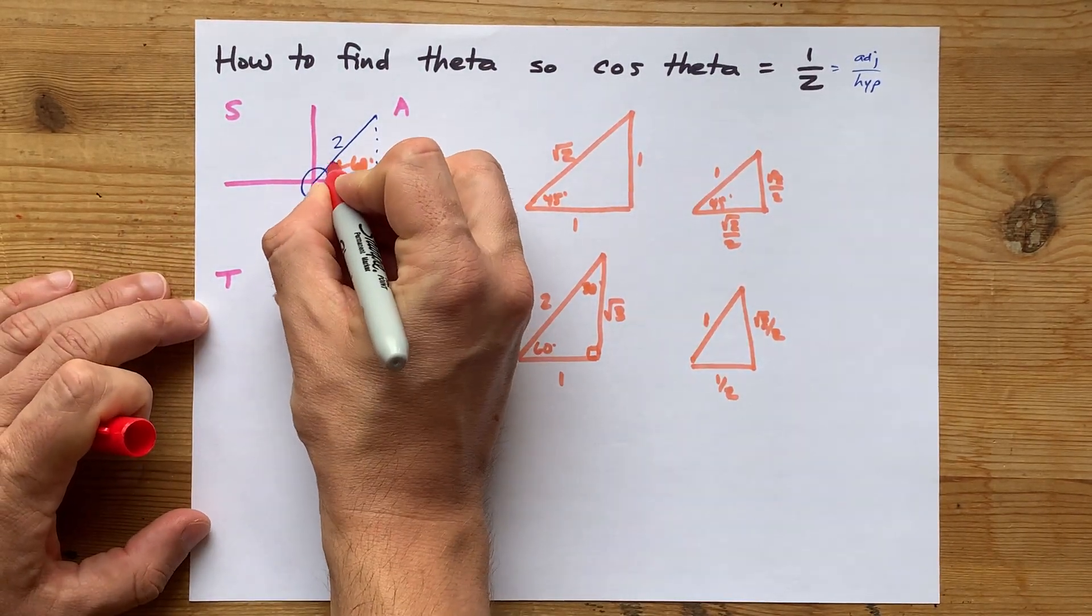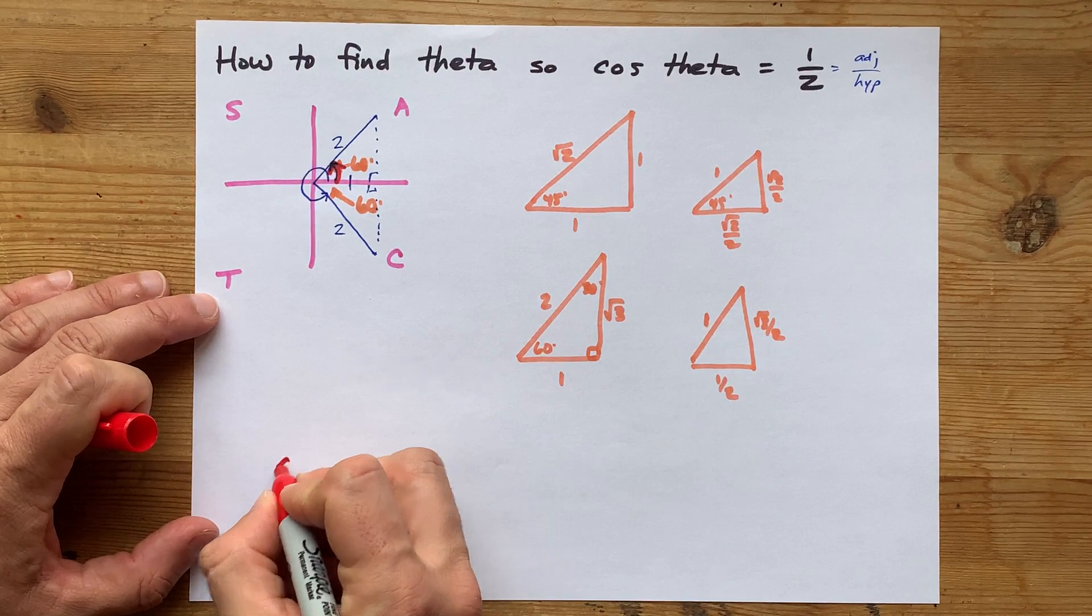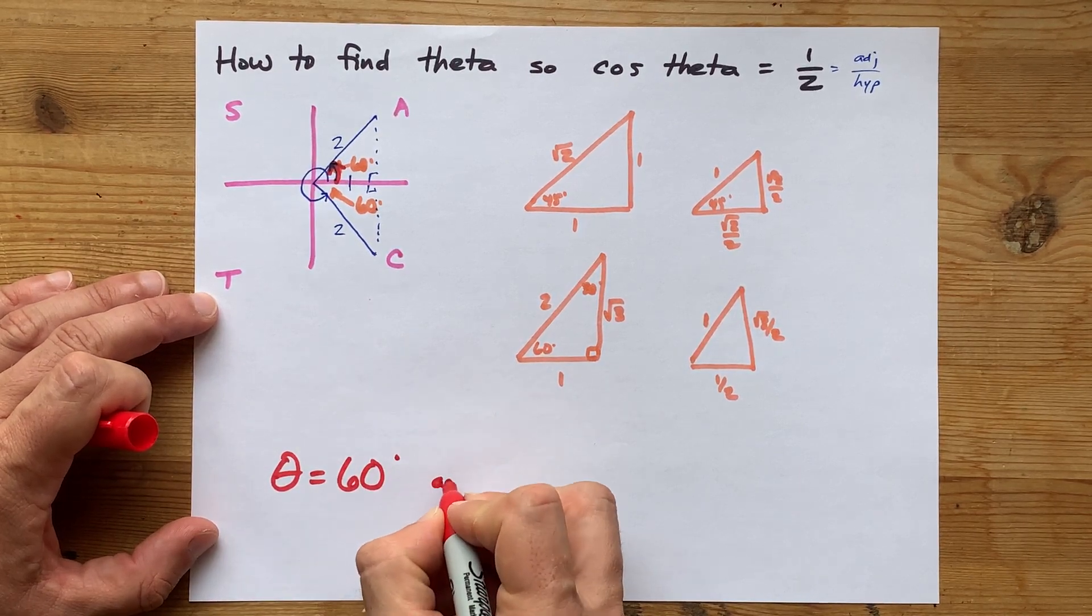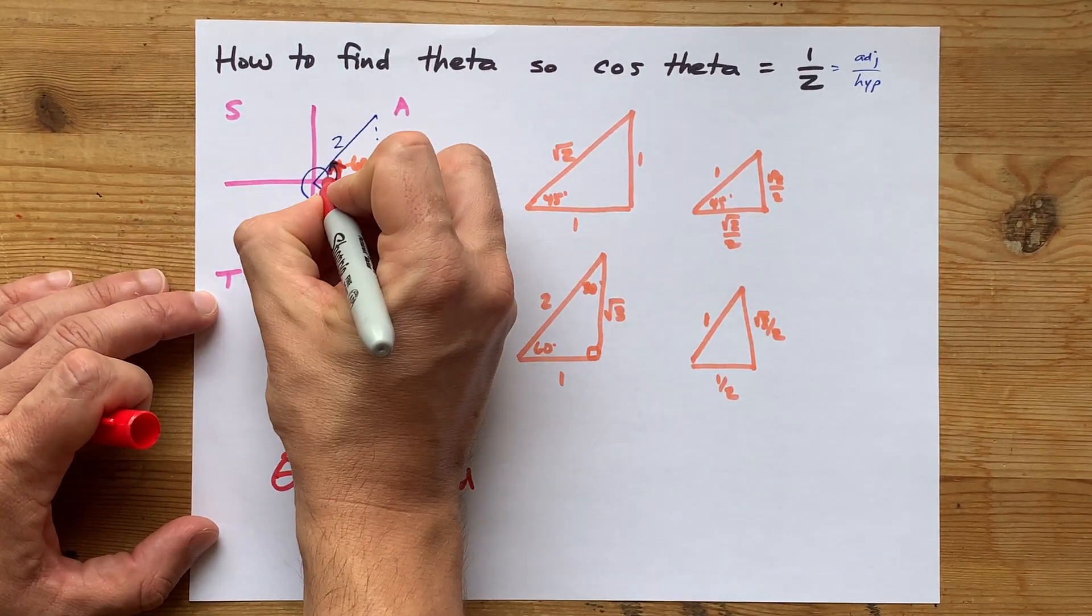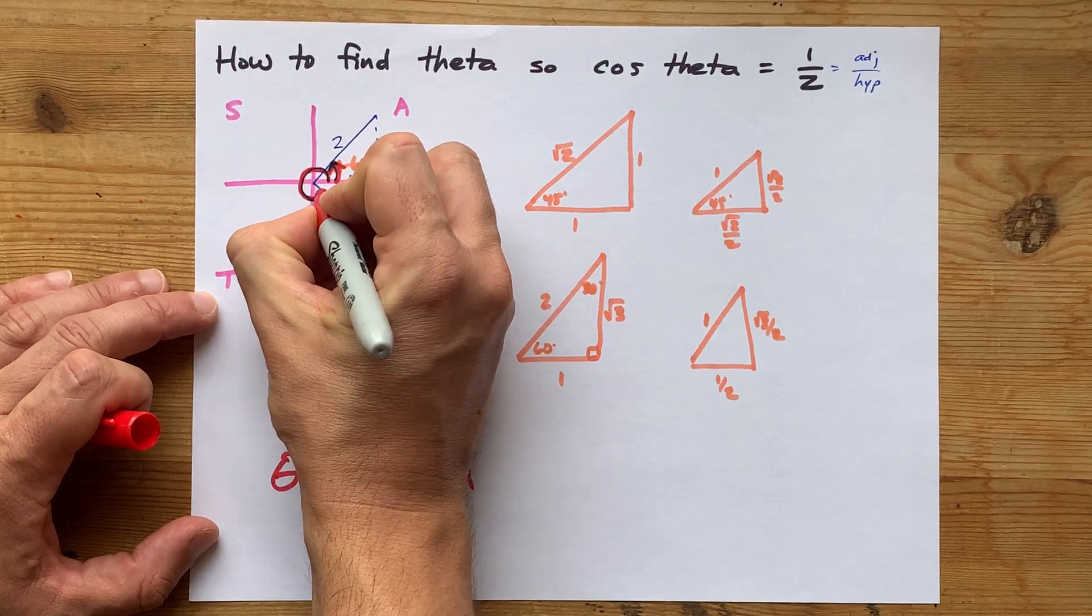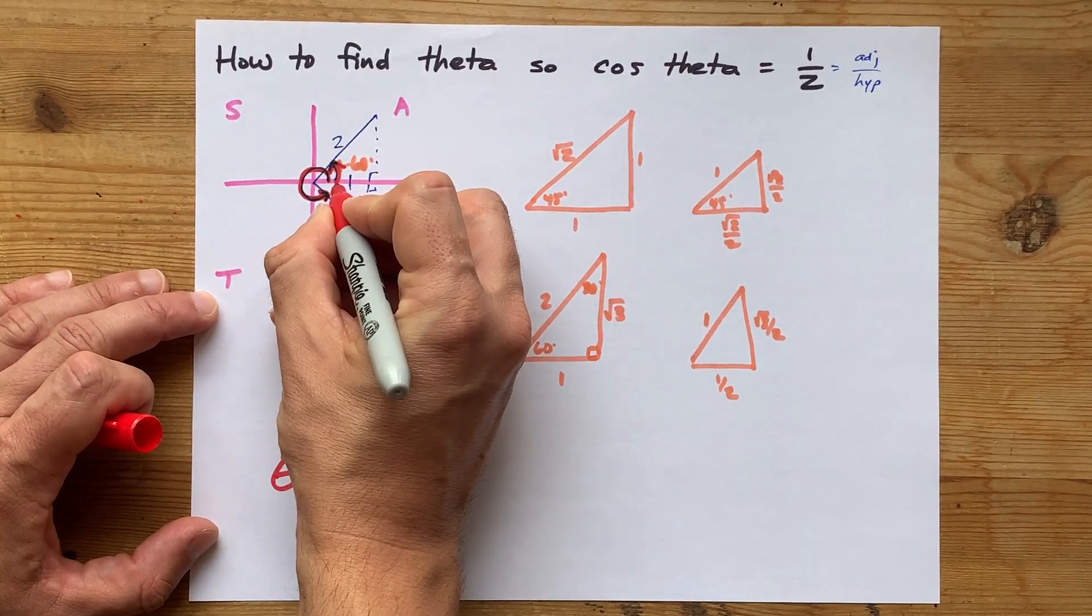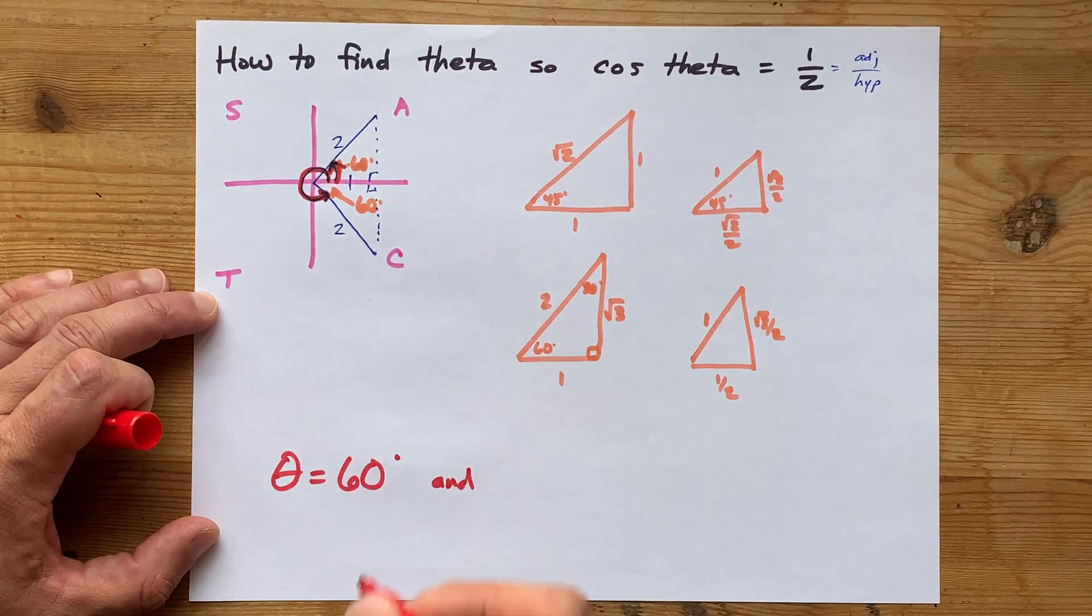...this, which itself is 60 degrees, and whatever angle gets you to the same terminal arm that happens to be short of a full circle by 60 degrees.